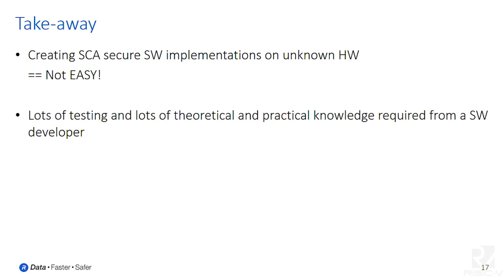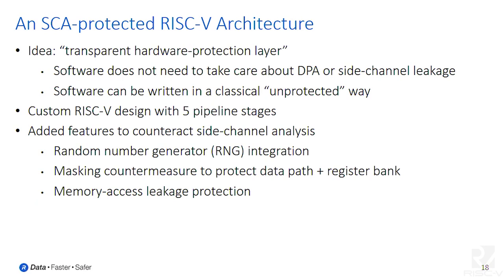Creating side-channel secure software implementations without knowing the exact hardware is very hard, and you need to do a lot of testing — since you can't enumerate all the places where a leak might happen, you have to test it in real life. It's time-consuming. So while we were designing a new processor anyway, our idea was to create a transparent hardware protection layer such that the software developer does not need to take care about DPA anymore. Basically, he can write unprotected software and it will be DPA-hardened to a certain level, with the software developer mostly not needing knowledge of the topic.